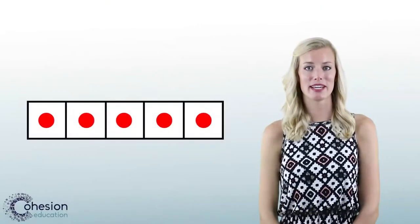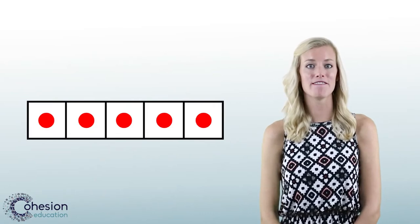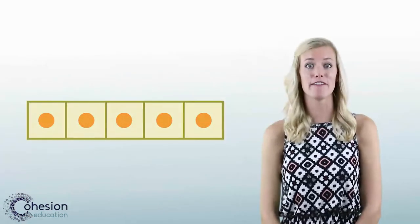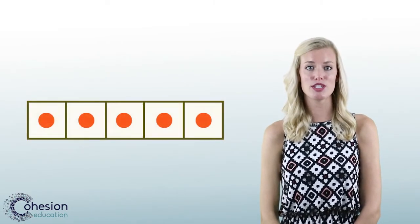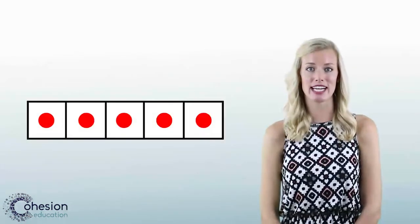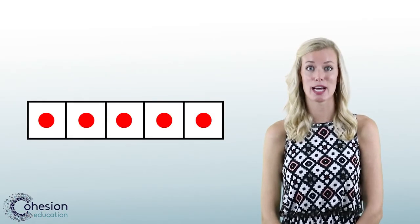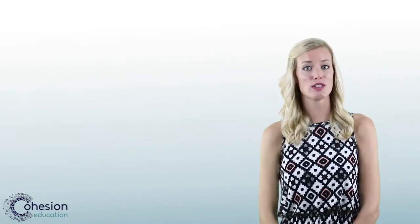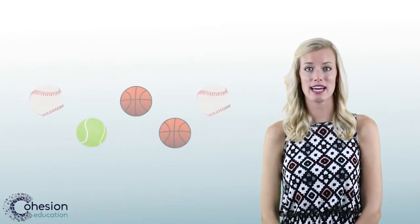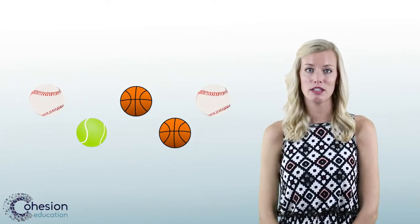Students often do not make the connection that there will always be 5 counters in a full 5 frame. Students should be able to recognize this to improve their accuracy in counting. Students should also practice counting different objects in a group.